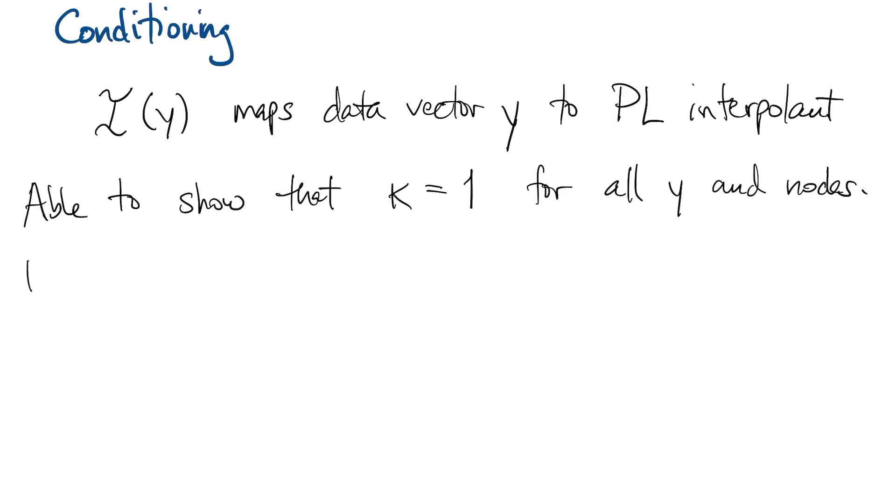So let's suppose we take our data vector y and we perturb it to y plus z. That changes the interpolant. Thanks to the linearity, the change in the interpolant is just i applied to z.